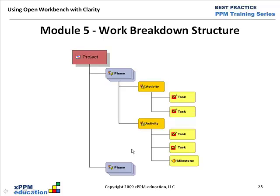When I say methodologies, there are a number being used by companies — for example, PMI, PMBOK (Project Management Body of Knowledge), RUP (Rational Unified Process), Agile, and Prince, just to name a few. So instead of 'phase,' it might be called a 'stage,' but it is a natural hierarchical breakdown of the project work.